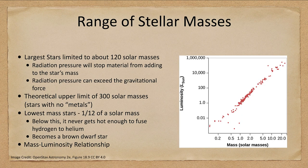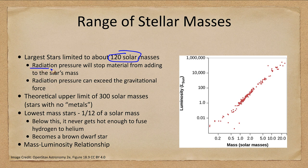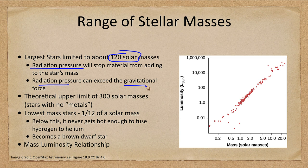Now what kind of range do we get in these? Well the largest stars are limited to a little over a hundred solar masses. Why? Because radiation pressure becomes so intense that the star is producing so much energy that the radiation pressure will overwhelm gravity and will keep the star from adding more material there. So radiation pressure exceeds the gravitational force.